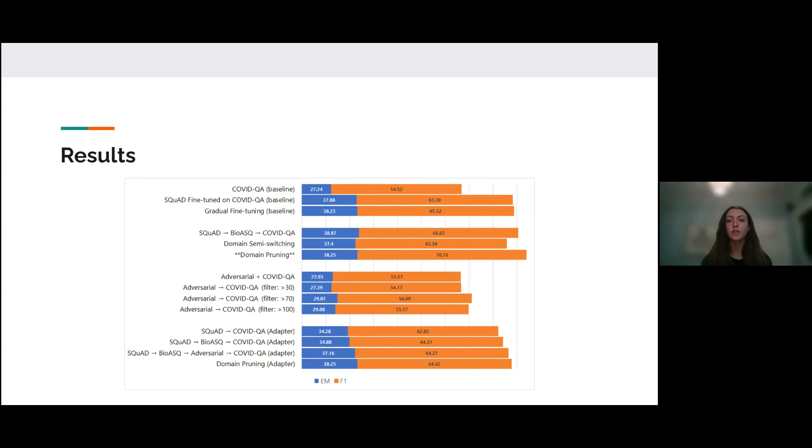So in the end, we found that the modified gradual fine tuning method we call domain pruning yielded the greatest improvement over all of our experiments with an F1 score of 70.76. Our experiments found that adversarial training improved upon the baseline when used to pre-train before fine tuning. And our adapter models also benefited from both these techniques while their effects were less so than the full model.